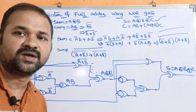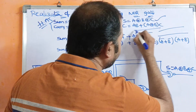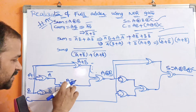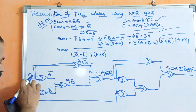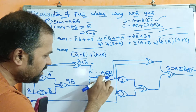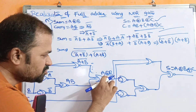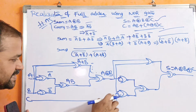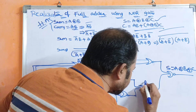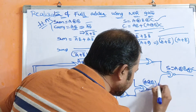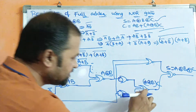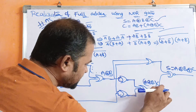Now we need to produce the carry. In the full adder, the formula for carry is AB plus (A exclusive-or B)·C. From the first half-adder, we already have AB as the carry output, because the inputs there are A and B. Likewise in the second half-adder, since the inputs are A exclusive-or B and C, that NOR gate produces (A exclusive-or B)·C as its carry output.